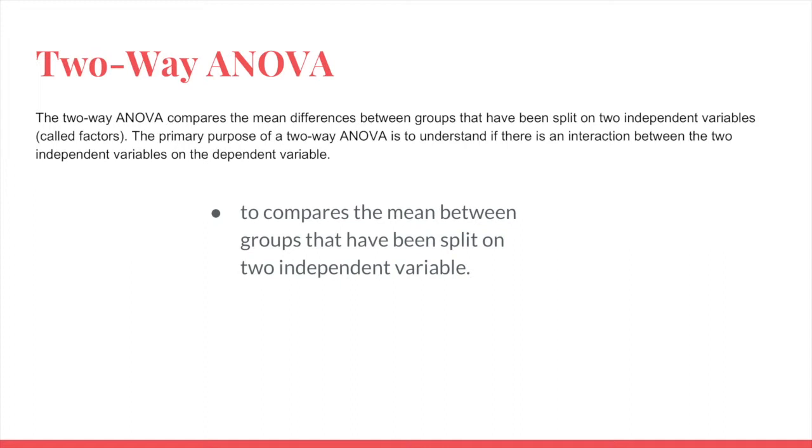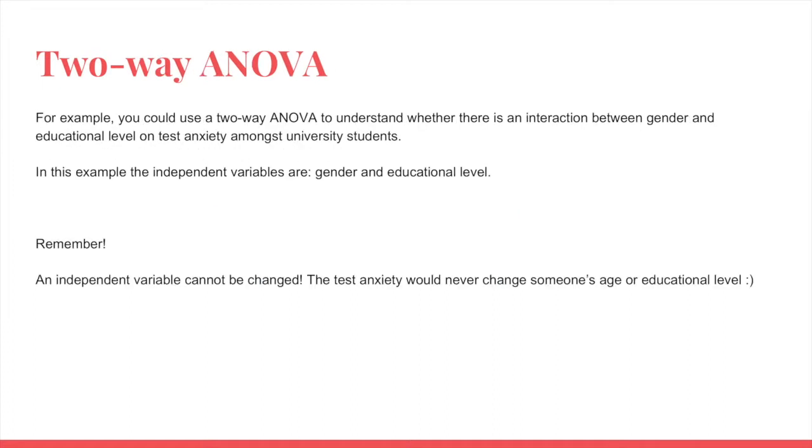So in this case, we are dealing with two independent variables, not just one. And the primary purpose is to see if there is an interaction between those two independent variables. And I'm going to take an example here. For example, you could use a two-way ANOVA to understand whether there is an interaction between gender and educational level on test anxiety amongst university students. So in this case, what are the independent variables here? The independent variables here are gender and educational level.